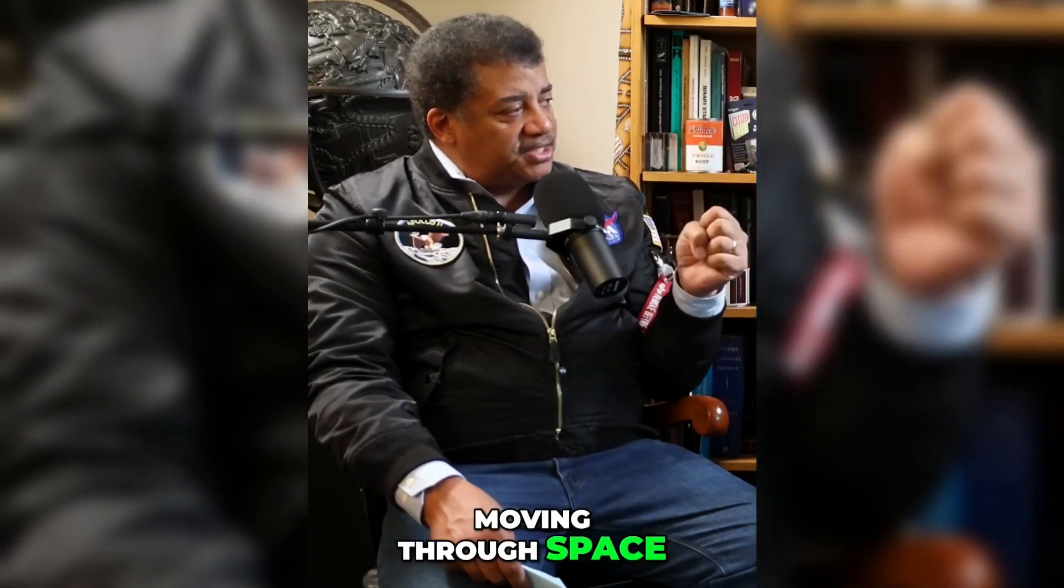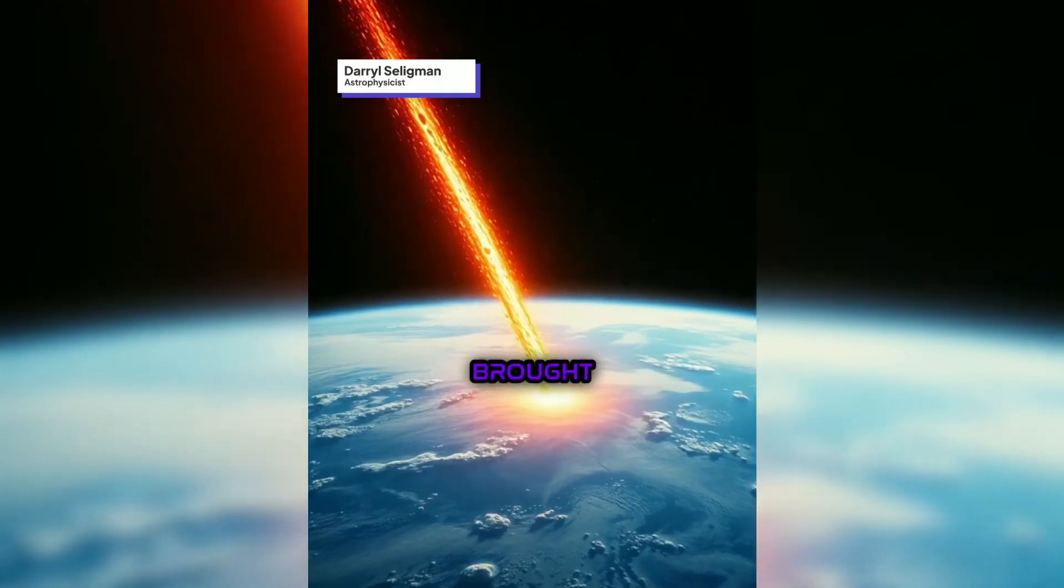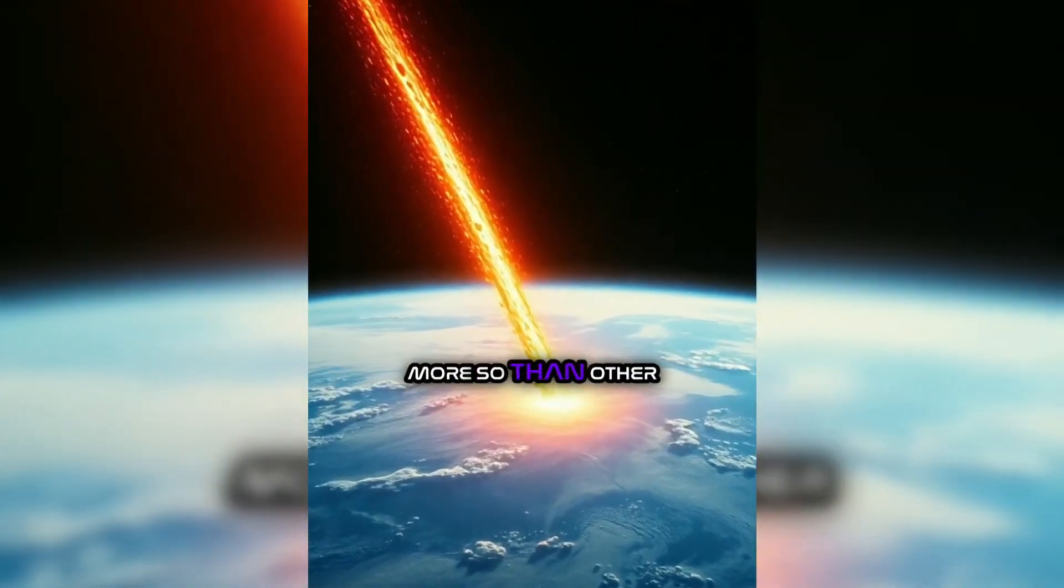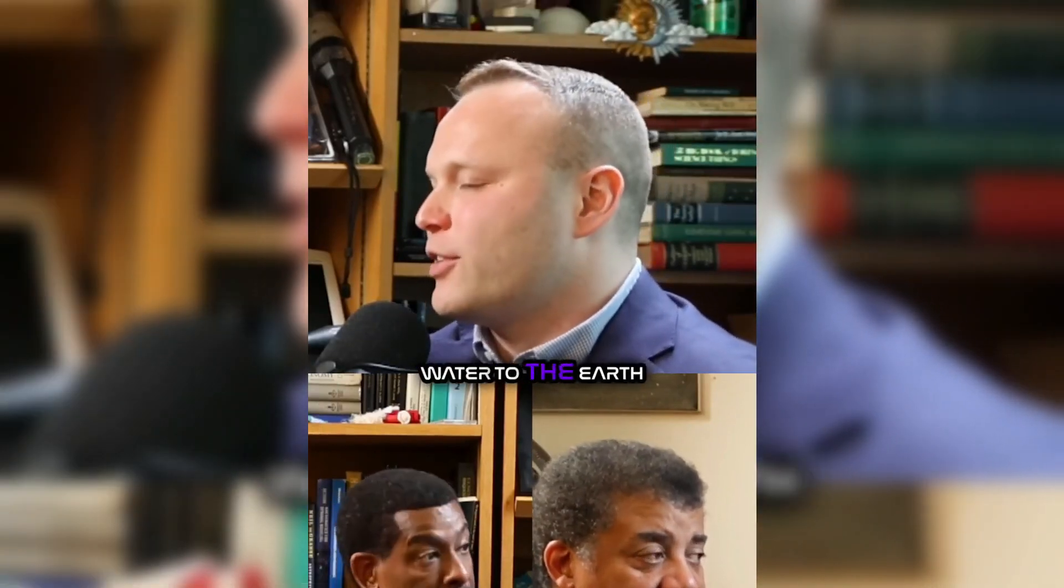We think of them as these white things moving through space, but their material is very dirty. Discuss the possibility that the water, that dark comets could have brought water to the Earth. More so than other comets? Well, there's, so people used to think that comets delivered water to the Earth, and we still don't know where the Earth's oceans came from.